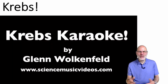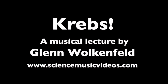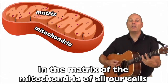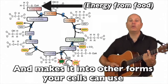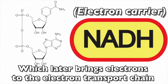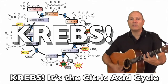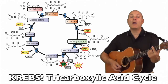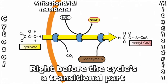Krebs Cycle Song: In the matrix of the mitochondria of all our cells is the cycle of reactions that won Hans Krebs the Nobel Prize. The cycle takes the energy in food and makes it into other forms your cells can use. Krebs cycle makes electron carrier NADH, which later brings electrons to the electron transport chain, and makes FADH2 — its function is the same. Krebs also makes some ATP. It's a citric acid cycle. Each cycle makes one ATP, 3 NADH, 1 FADH2.